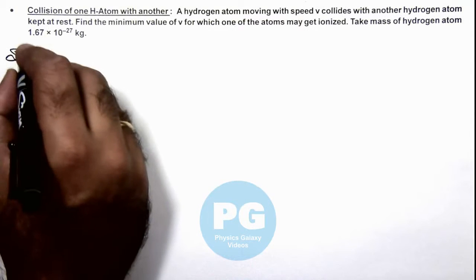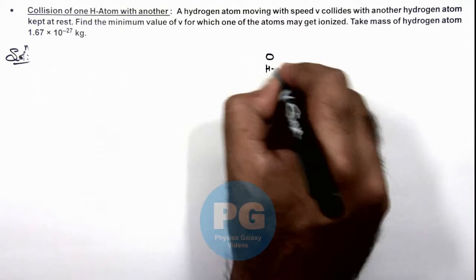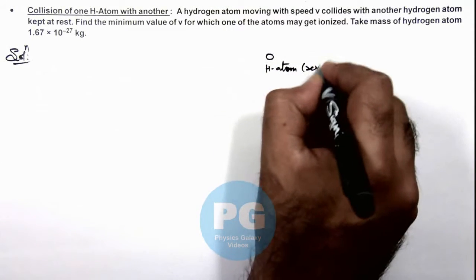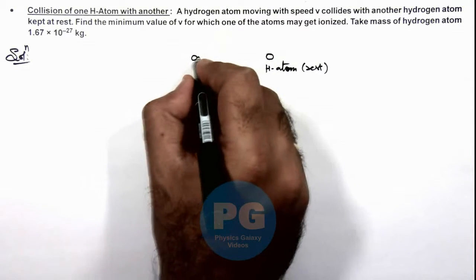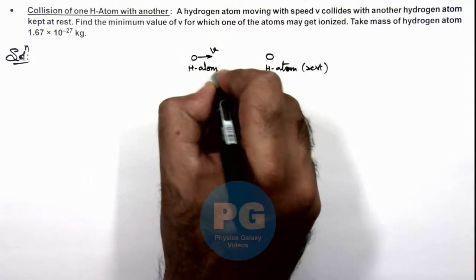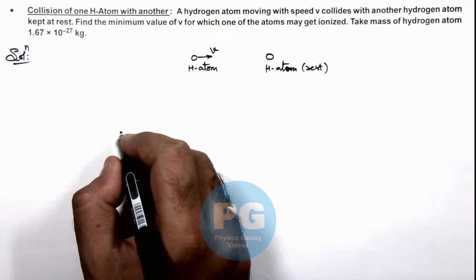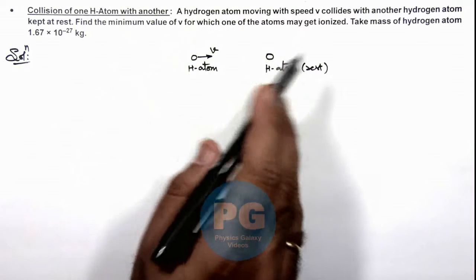Here in solution we can see one hydrogen atom is at rest and another hydrogen atom is moving with speed v, collides with the hydrogen atom at rest. In this situation, we are required to find the minimum value of v for which one of the atoms may get ionized.